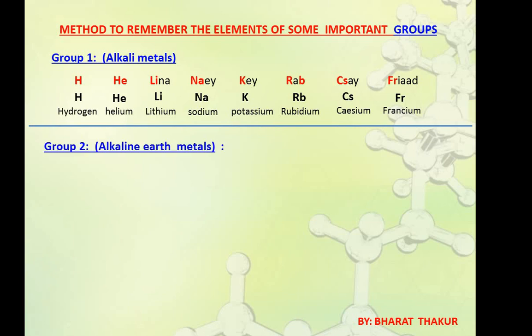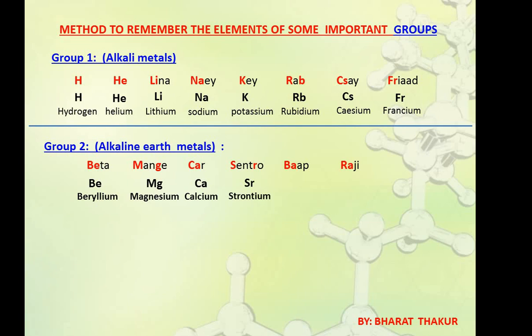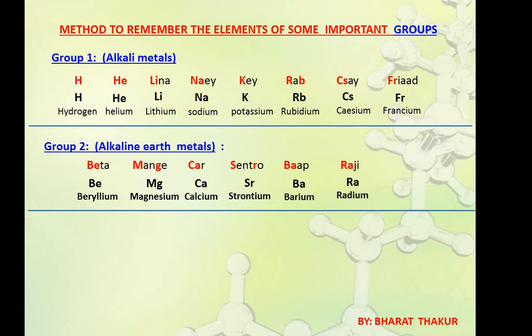Similarly for group 2, alkaline earth metals, the shortcut is 'Beta mange kar sentro bar praji'. Here 'beta' indicates Beryllium, 'mange' indicates Magnesium, 'kar' for Calcium, 'centro' for Strontium, 'bap' for Barium and 'raji' for Radium. By knowing this shortcut we can arrange the elements of group 2 — Beryllium, Magnesium, Calcium, Strontium, Barium, Radium — in correct order.